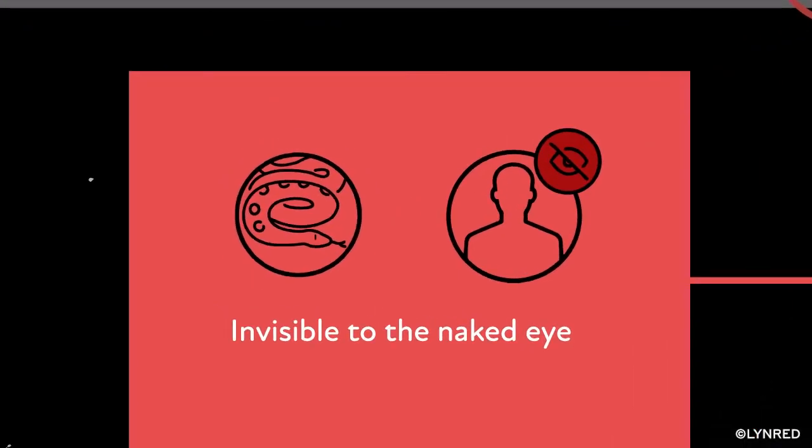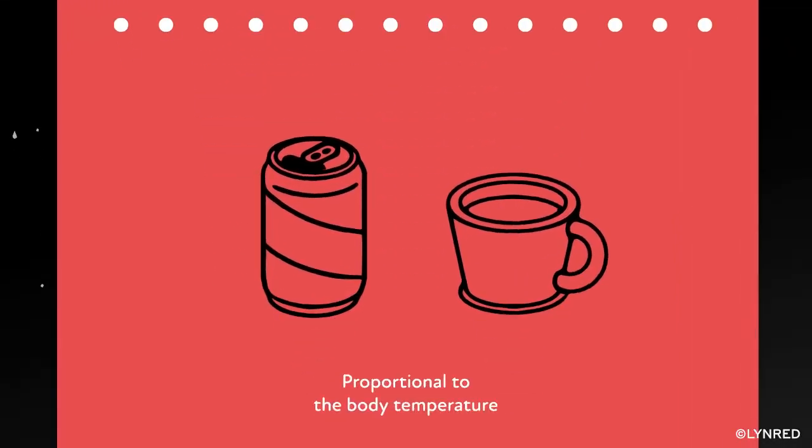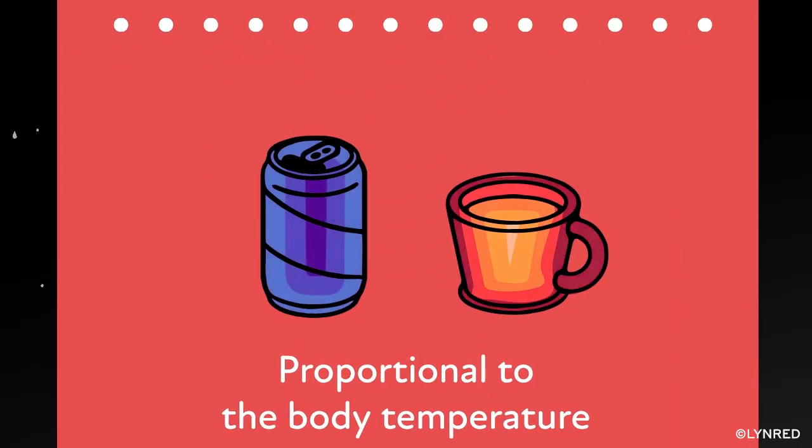Only some animals, such as snakes, can see infrared radiation, which is proportional to the temperature of the body being observed.